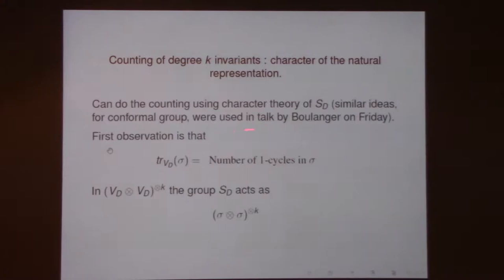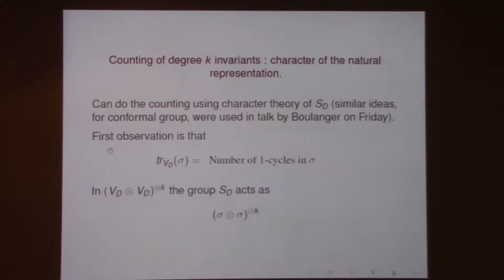You have the k-fold tensor product of V_d⊗V_d, and S_D will act as σ⊗σ, k times. If you count degree k invariants, there are two symmetric groups involved. One of them is S_D which permutes the basis vectors, giving σ⊗σ, and there's also S_K because you're looking at polynomials of degree k.